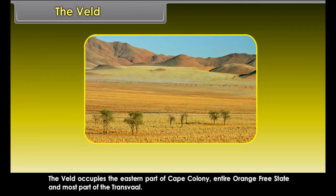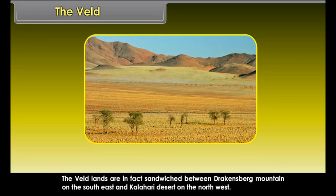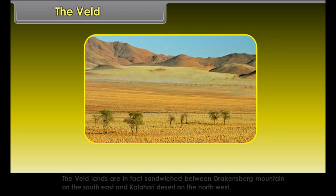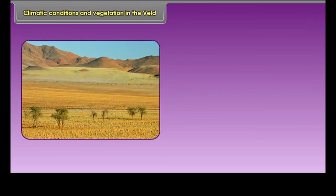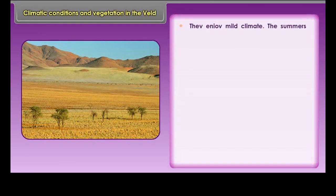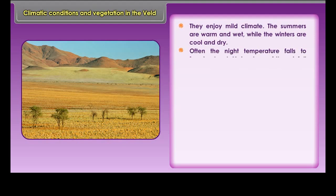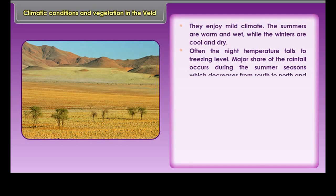The Veld: The Veld, a temperate grassland, is found in the southern parts of Africa. Velds are rolling plateaus with varying heights ranging from 600 meters to 1100 meters. The Veld occupies the eastern part of Cape Colony, the entire Orange Free State, and most part of the Transvaal. The Veld lands are sandwiched between the Drakensberg Mountain on the southeast and the Kalahari Desert on the northwest. Scattered trees occur only on elevations and along the course of streams.